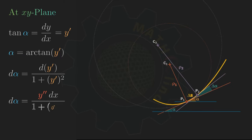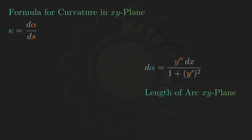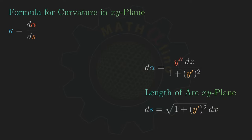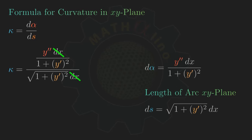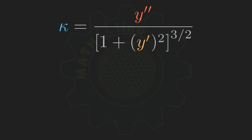The derivative of y prime is equal to y double prime dx. With this information, we can proceed to the formula of curvature in the xy plane. Recall that kappa is equal to d alpha over ds, and that ds in the rectangular plane is defined as the square root of the quantity 1 plus y prime squared, times dx. Substituting d alpha and ds into our equation of kappa, we get this equation. We can cancel dx. Note that the quantity 1 plus y prime squared appears with power one in the numerator and power one-half in the denominator; combining them gives a total power of three-halves. This gives us the formula: kappa is equal to y double prime all over the quantity 1 plus y prime squared, raised to the three-halves power.